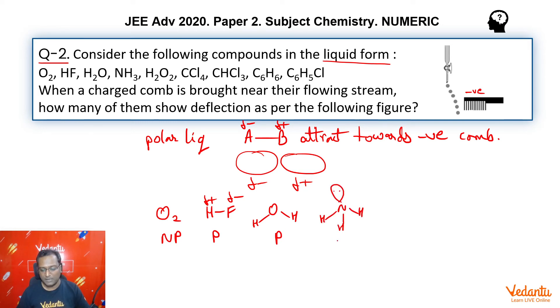There is a lone pair present, pyramidal in shape. Then H2O2 is also a polar molecule—if you remember, open book-like structure. Next is CCl4. Let me write it here. CCl4 is a symmetrical molecule. CCl4 will be non-polar.